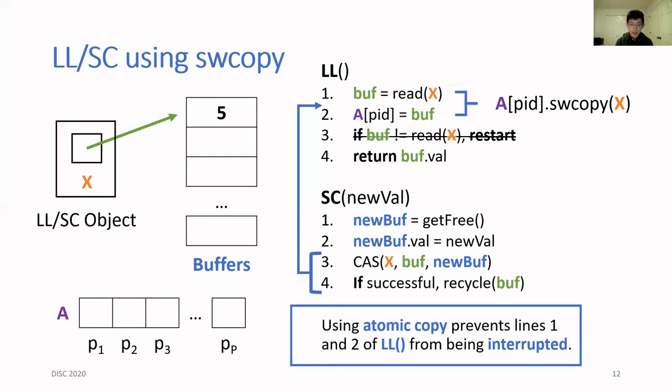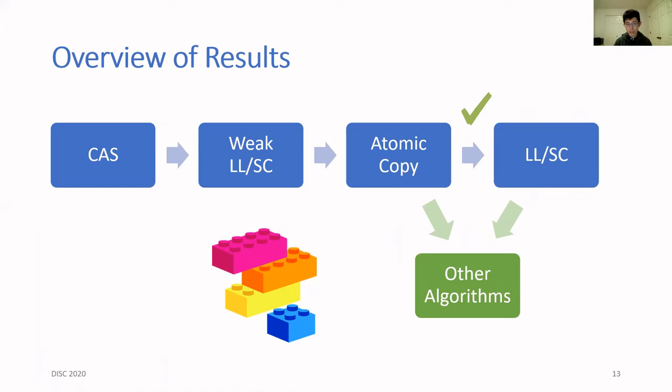With this change, we don't need to restart on line three anymore. The linearization point of the SC operation would be at the compare-and-swap on line three, and the linearization point of the LL would be at the single-writer copy operation. If we implement the recycle method properly, then we can show that all operations take constant time and the space usage is still m plus p squared.